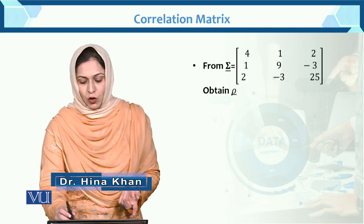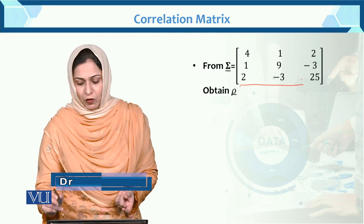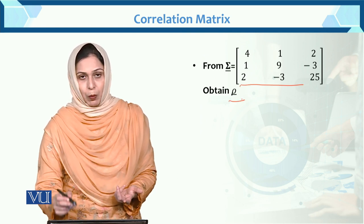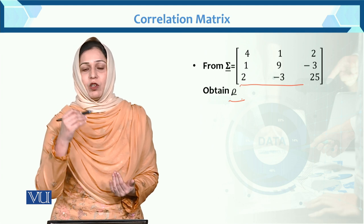Now check from variance covariance matrix. We have the variance covariance matrix and find the correlation matrix.